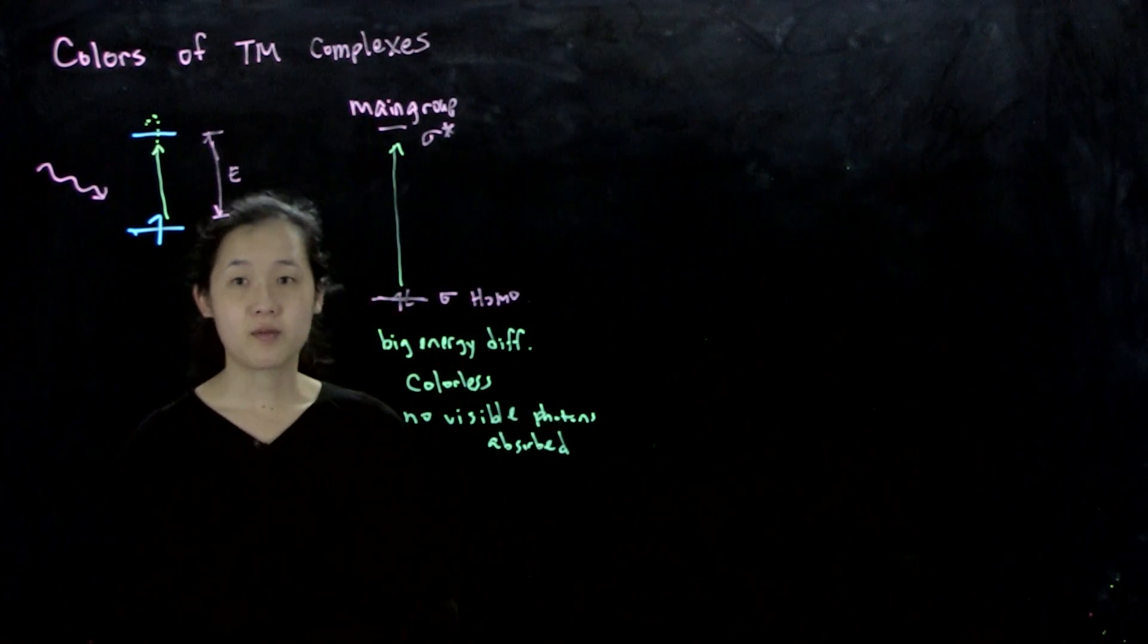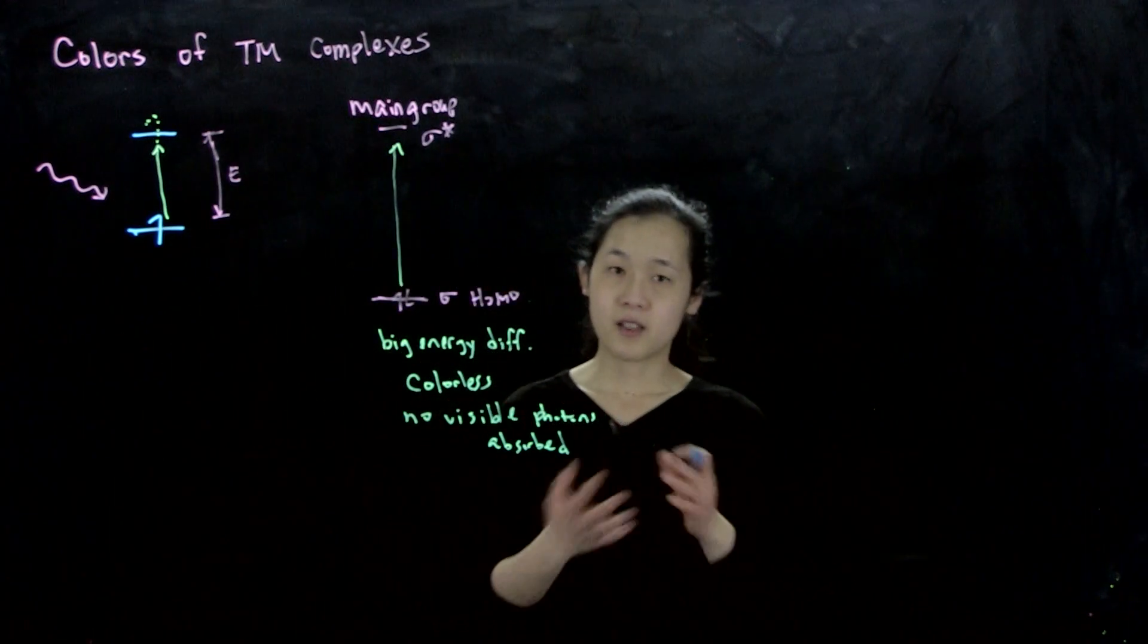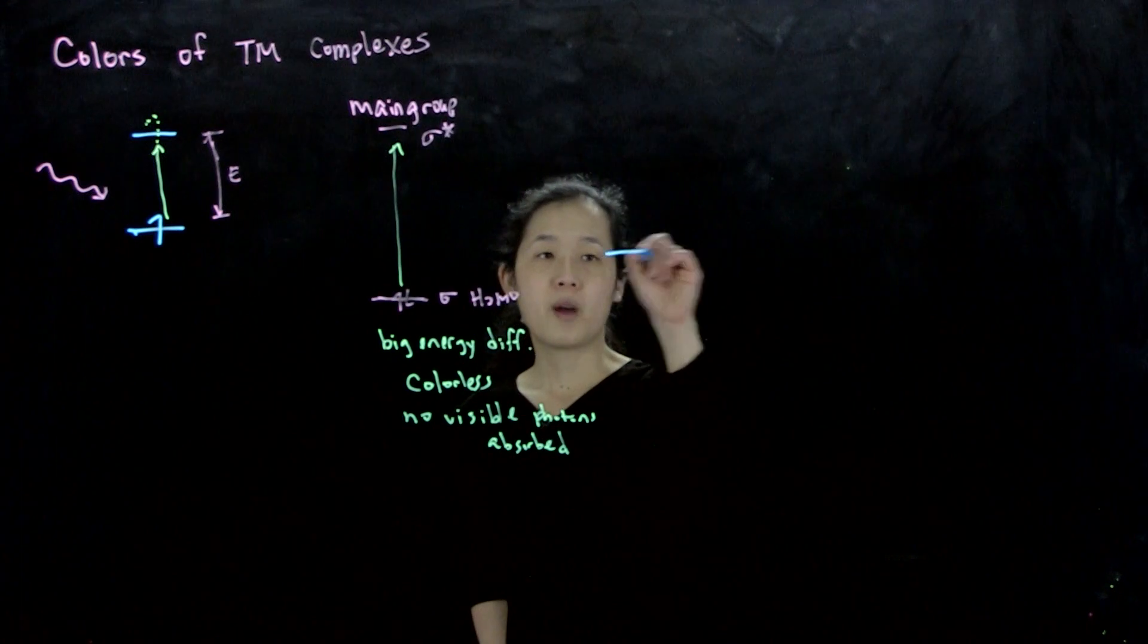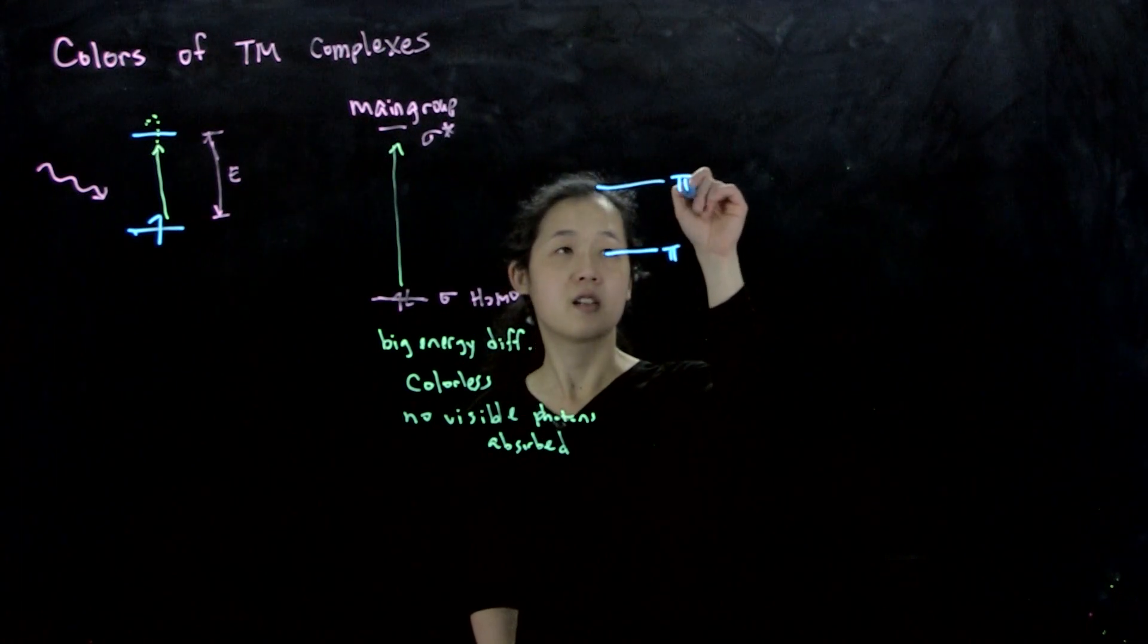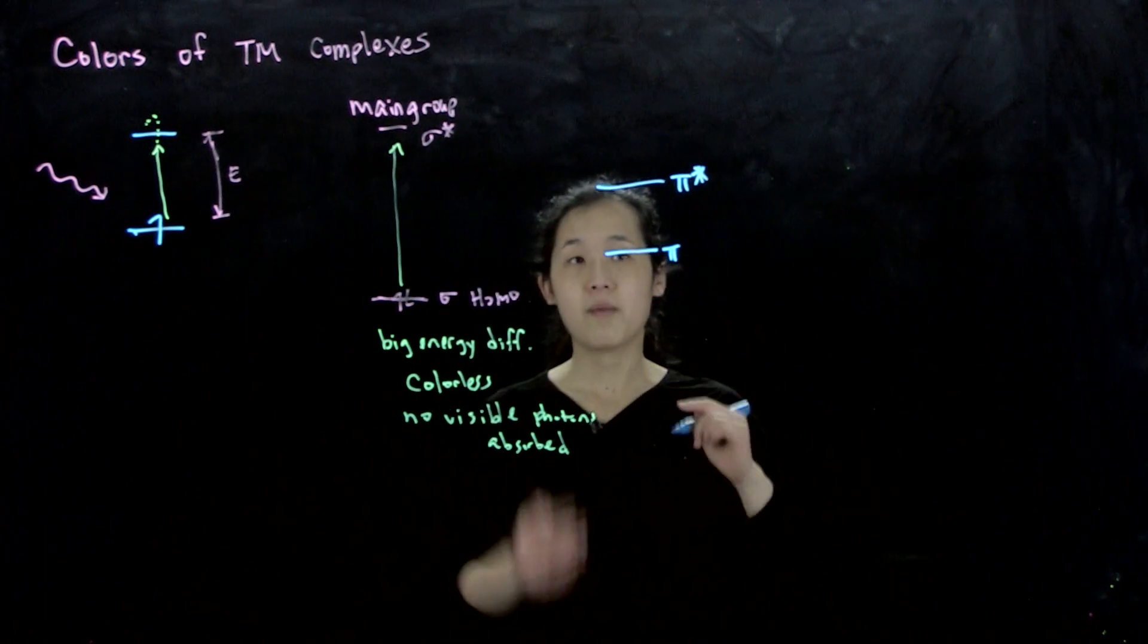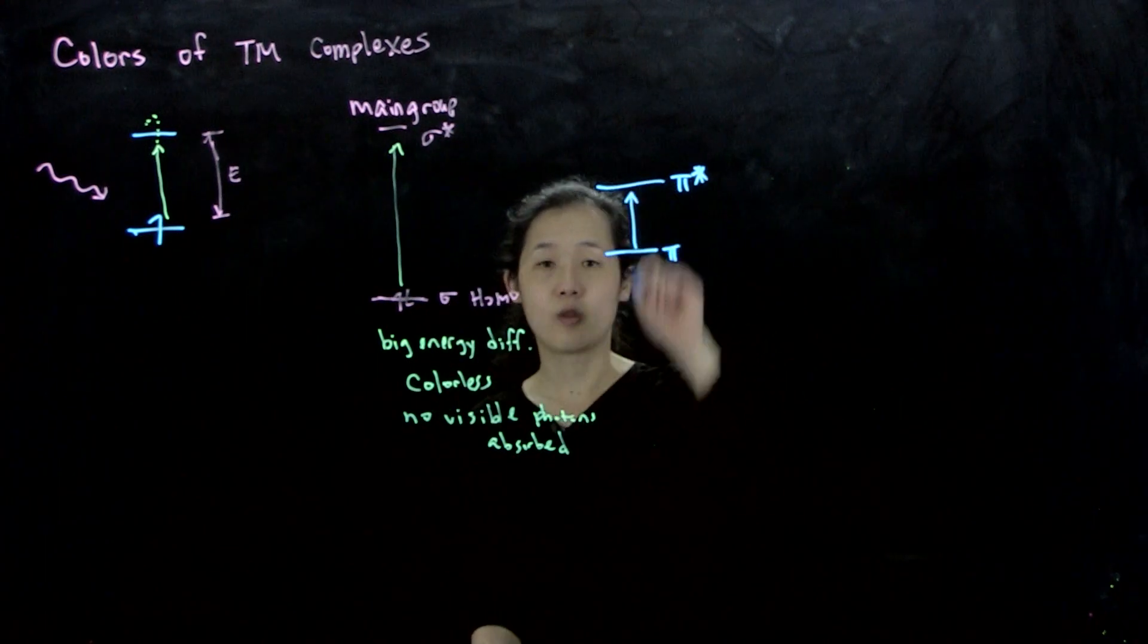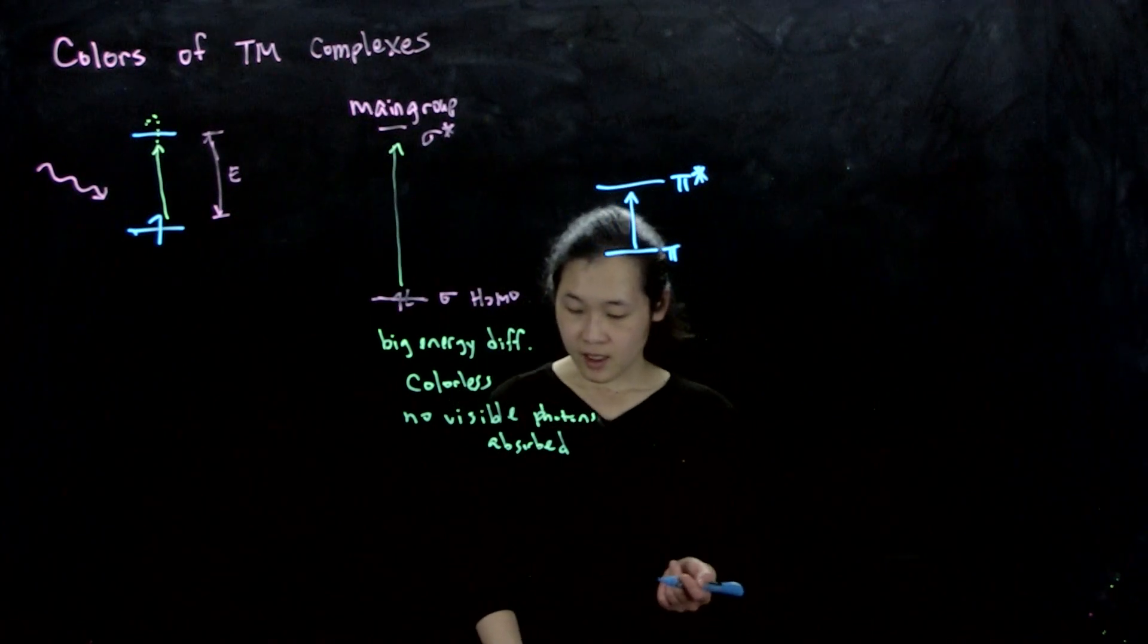If we have a more conjugated system, like pi conjugated aromatic systems that are very delocalized, then our HOMO might be in the pi, then our LUMO might be in the pi star. The more conjugated you are, the smaller the gap, and then we might have more visible photons. This might be colored. A lot of dyes are conjugated systems.